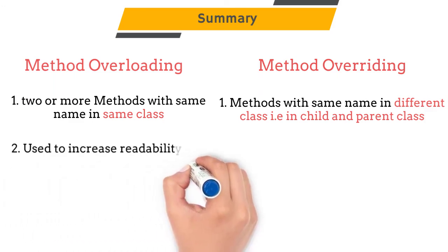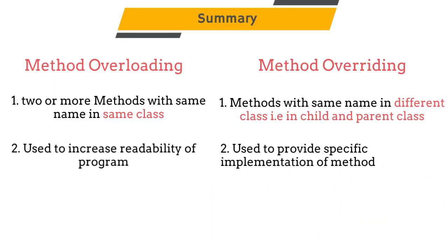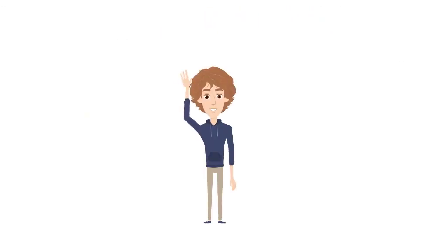Method overloading is used to increase the readability of a program. Method overriding is used to provide the specific implementation of that method. That's it for today's video.